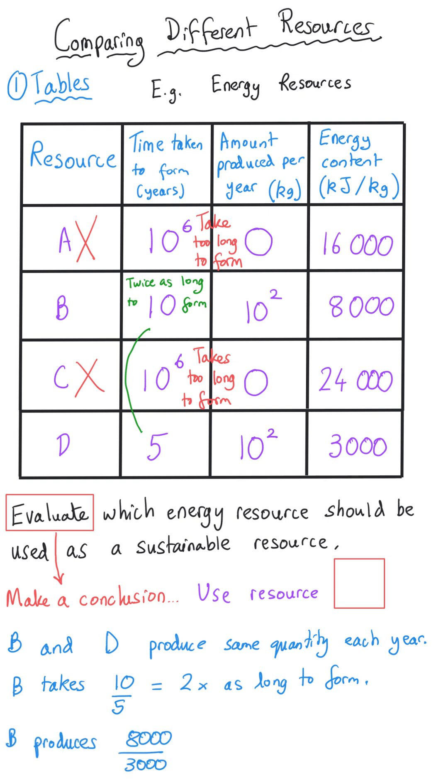However as a fuel B produces greater than twice as much energy per kilogram of this fuel. So it is probably worth waiting the extra five years even though that's twice as long we get more than twice as much energy per kilogram afterwards.